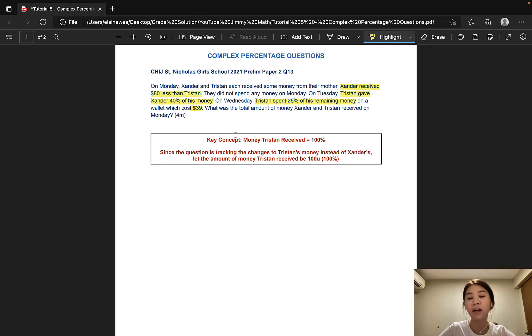So if we read the question carefully, we would notice that the question is actually only tracking the changes to Tristan's money and not Xander's. So in this case, it would be much easier to let the amount of money Tristan received be 100%. Since Tristan's money is 100%, I would use 100 units to represent his money because students are typically more comfortable using units.